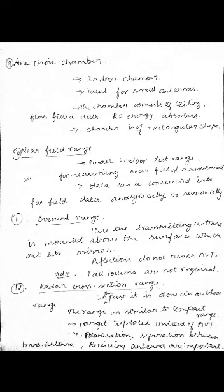The last range is the radar cross-section range. Previously done in outdoor ranges, it is now brought into compact range. Instead of a standard antenna under test, a target antenna is used and its parameters are measured. Care must be taken for polarization matching between the target and transmitting antennas, as well as the separation between them. These are all 12 antenna ranges explained briefly.